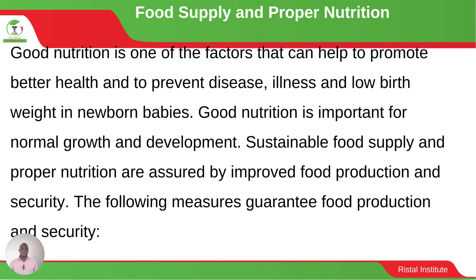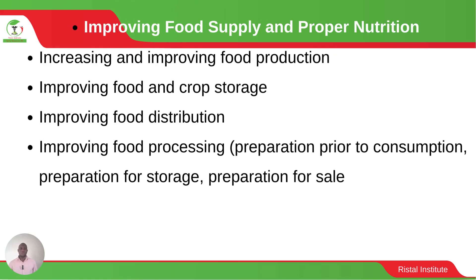Regarding proper supply of food and proper nutrition, we recognize that nutrition is very important in improving health and preventing diseases. Children born to malnourished mothers face significant health risks. It is therefore very important to have sustainable food supply and improved food production so that communities don't suffer from malnutrition. Different measures can be instituted to increase food production and improve storage, distribution, and processing so that there is no wastage of food at any of those stages.